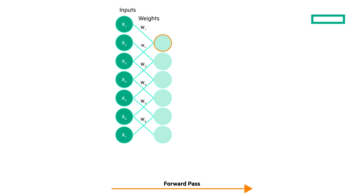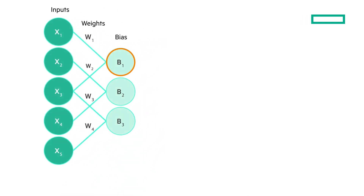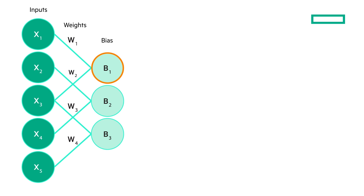Weights essentially map each input to a guess of how significant the node is in relation to its expected output prediction. Each node may then apply a bias, in an effort to have closer alignment with a training dataset, by balancing out acceptable thresholds before scores are sent to the activation function. The addition of bias increases the flexibility of a model and speeds up training time. On a per-node basis, an input weight and bias computation get summed to create a total input score.